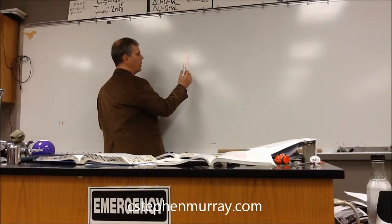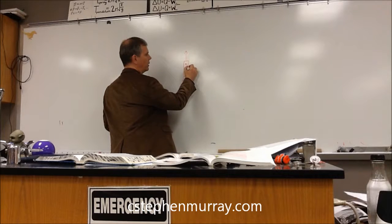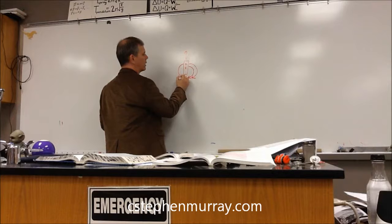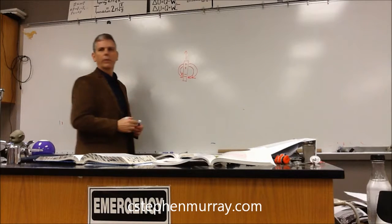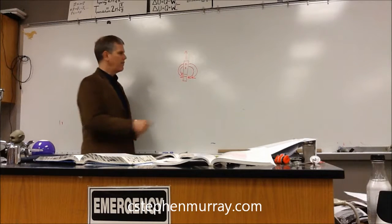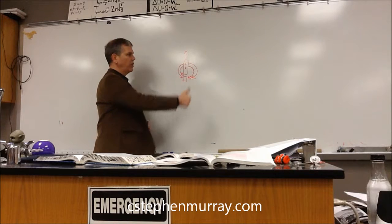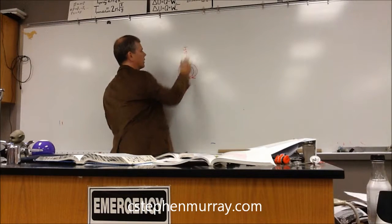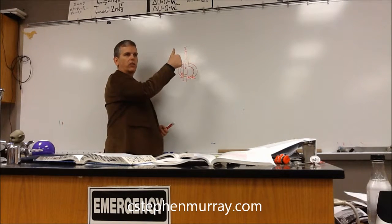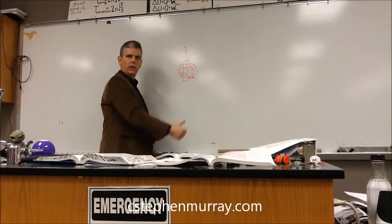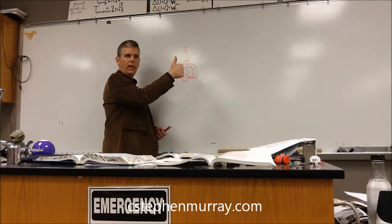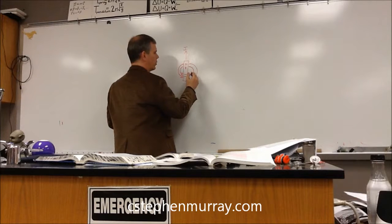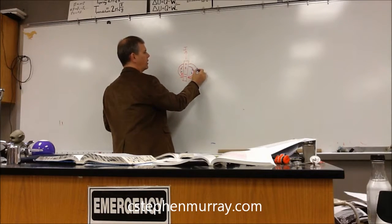We know that our electric field goes from positives to negatives. And if the current is going this direction, if positive charges are flowing that way, then that creates a magnetic field around the wire. So our magnetic field would be into the page on that side, and out of the page on this side.